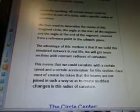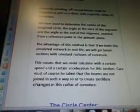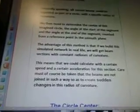Generally speaking, all curved beams could be regarded as part of a circle with a specific radius of curvature. We then need to determine the center of this imagined circle, the angle at the start of the segment and the angle at the end of the segment counted from a reference point in the azimuth plane. The advantage of this method is that if we build this simulated network in real life, we will get beam sections with constant radiuses of curvature. This means that we could calculate with a certain speed and a certain acceleration for this section. Care must of course be taken that the beams are not joined in such a way so as to create sudden changes in this radius of curvature.